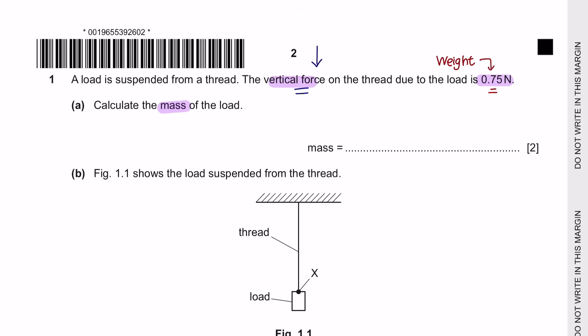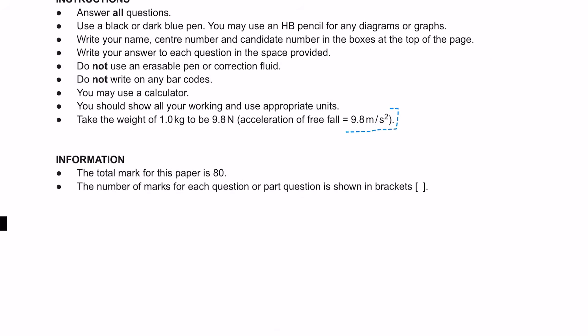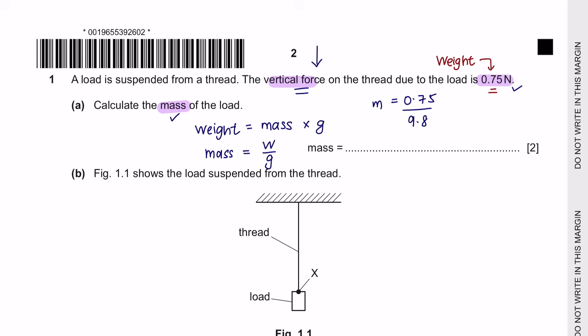Question A: Calculate the mass of the load. We are given the weight and asked to calculate the mass. The relationship is: weight equals mass times gravitational acceleration. Rearranging gives mass = weight ÷ g. The weight is 0.75 N and g = 9.8 m/s². Substituting gives 0.0765, which rounded to two significant figures is 0.077 kg.